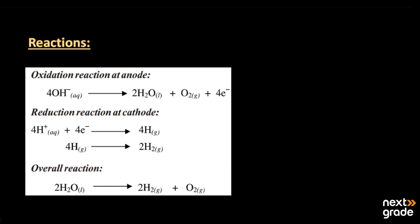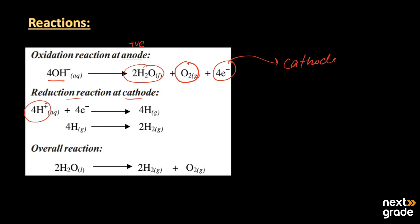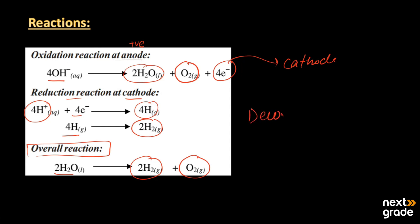At the anode, the oxidation reaction occurs: the hydroxyl groups as negatively charged ions move towards the anode, which has a positive charge. They produce a water molecule along with oxygen gas and lose four electrons. These electrons move towards the cathode where reduction takes place: four hydrogen ions gain electrons and change into four hydrogen atoms, which bond together to produce hydrogen gas. The overall reaction is the decomposition of the water molecule into hydrogen gas and oxygen gas.